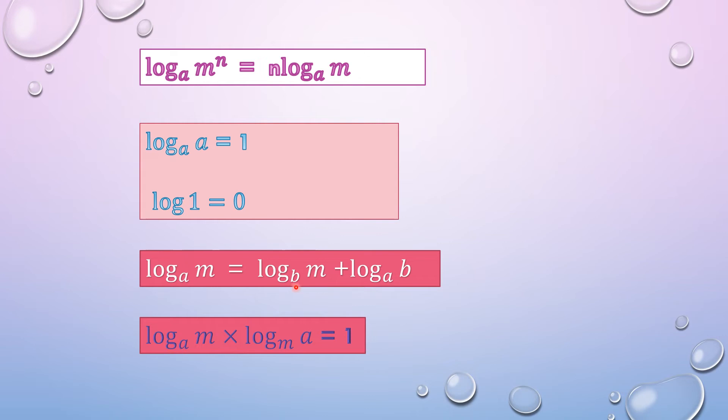We have taken a fresh letter b. Log of m will be written like this: the base will become b, and in the second term the base will remain the same, log of b, and the letter will become a.